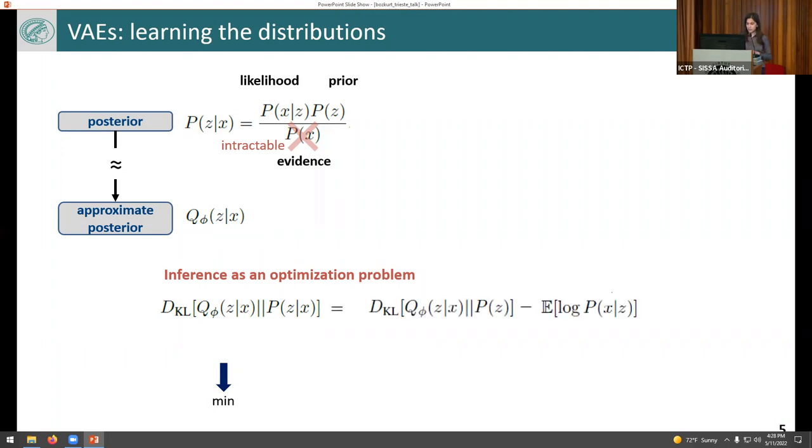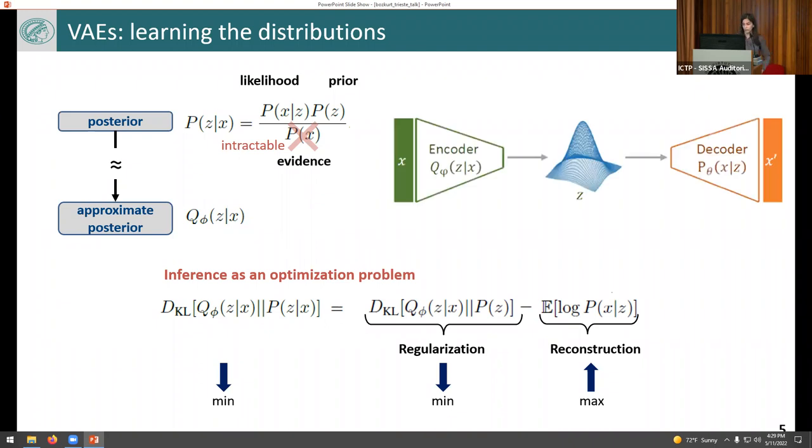With some manipulations, this can be written as a difference of two terms, where the first one pushes the latent space to the chosen prior and acts as a regularization. The other one is trying to maximize the reconstruction likelihood of the decoder or minimize the reconstruction error. This nicely follows the neural network view as well. The nice thing about variational autoencoders is that when the prior distribution is chosen as a Gaussian, there is an analytical solution, which makes things a lot easier.